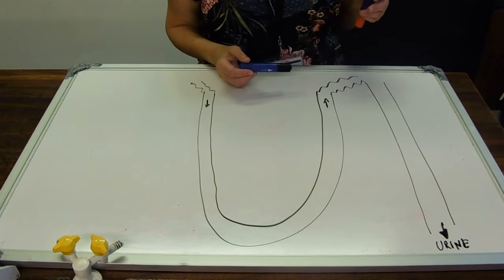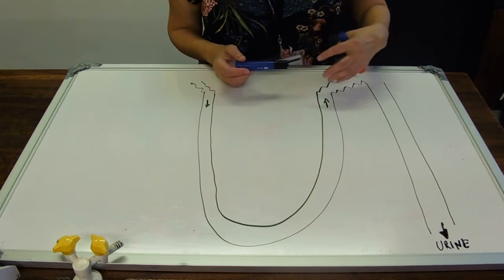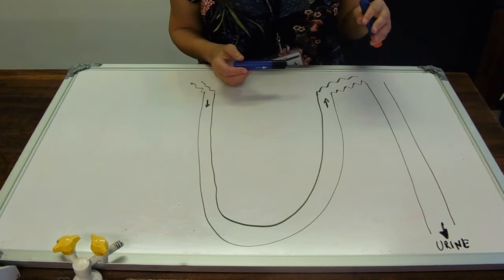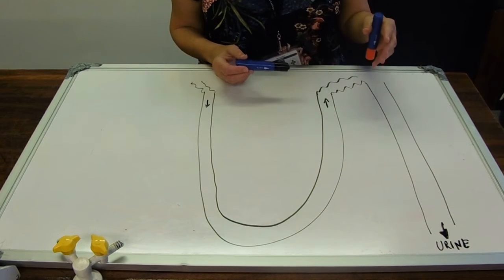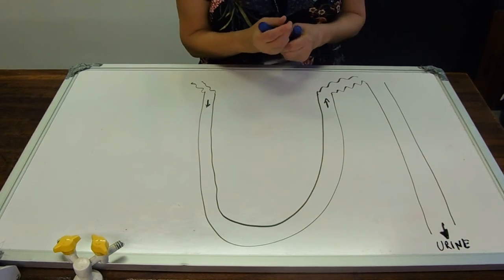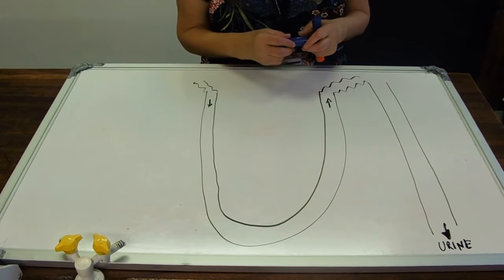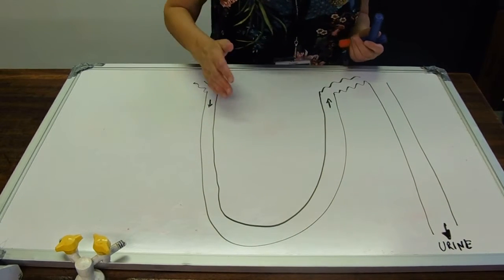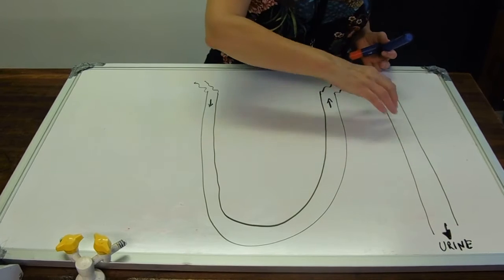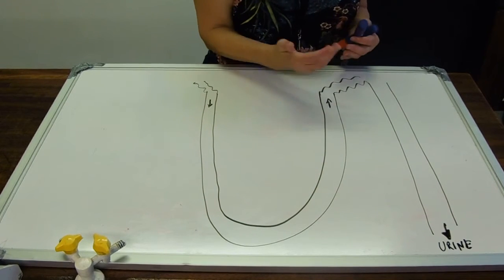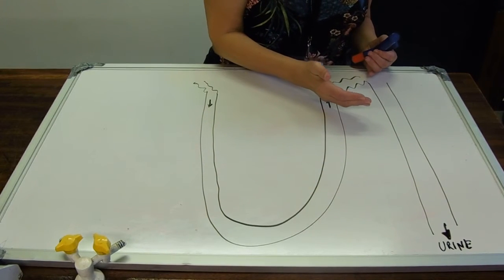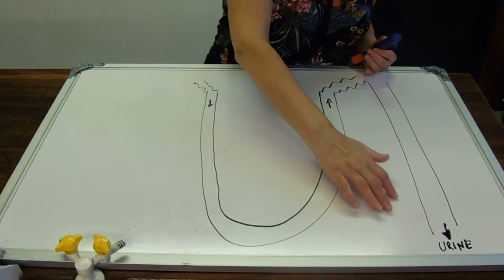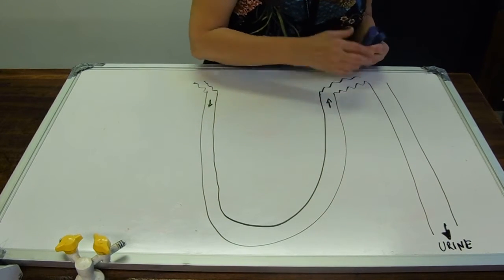Now, because as you take water out of a fluid, it gets more concentrated and its water potential gets lower, because it's got more solute in it, then as the fluid passes down through the collecting duct, if you need to take the water back, you're going to need an increasingly lower water potential.